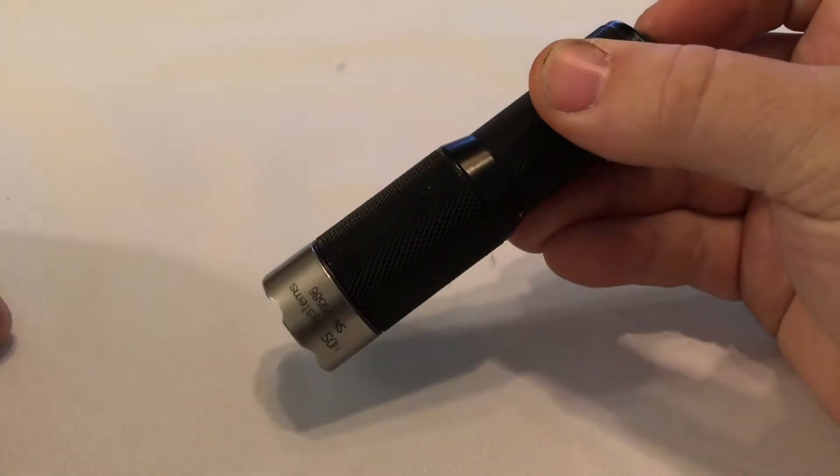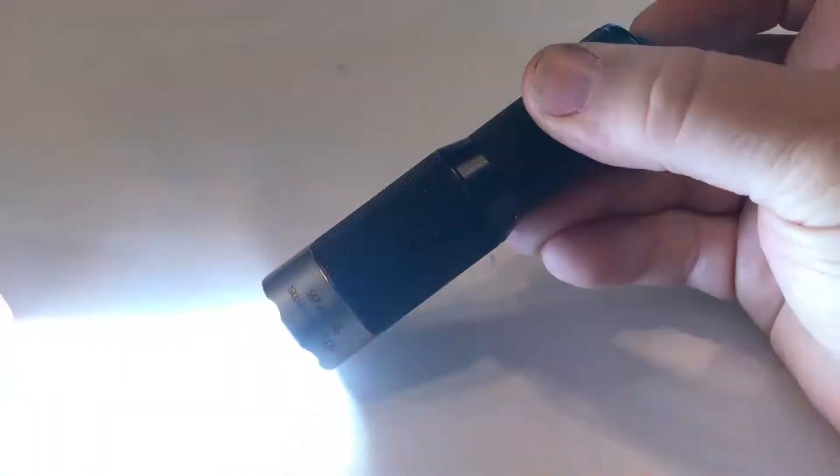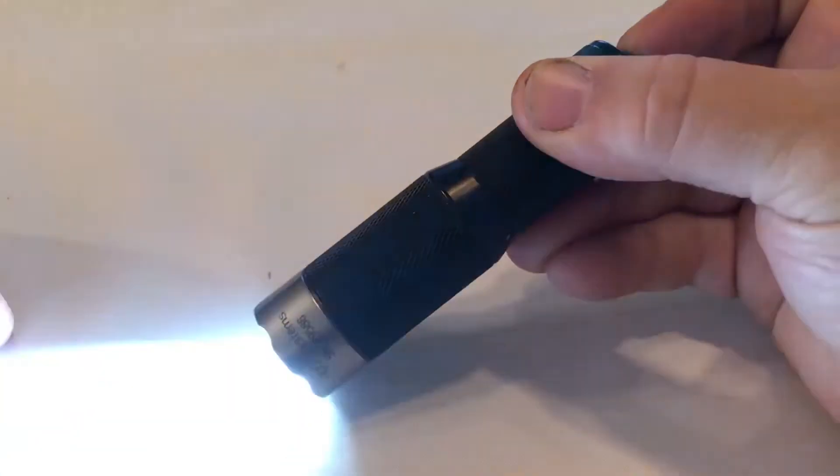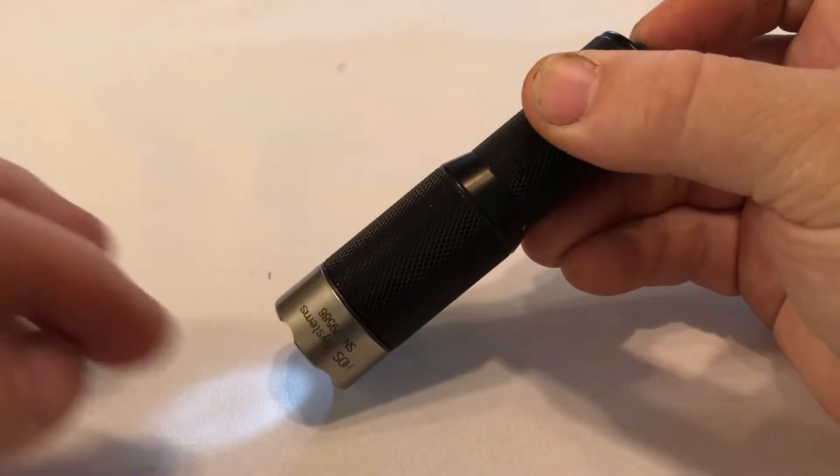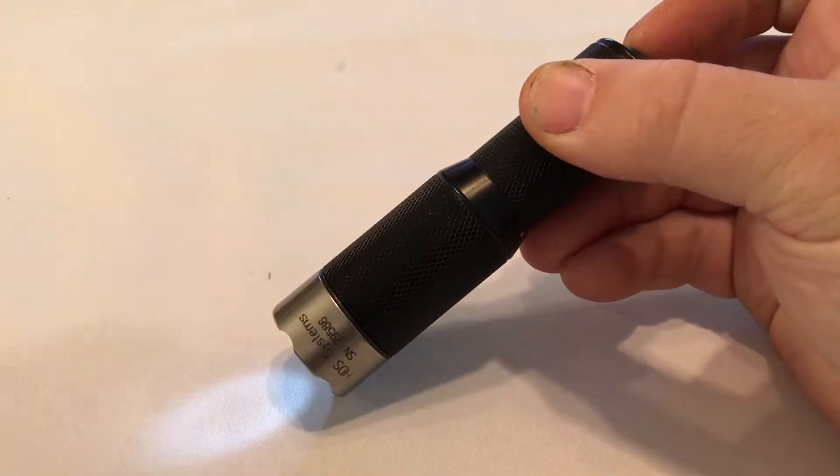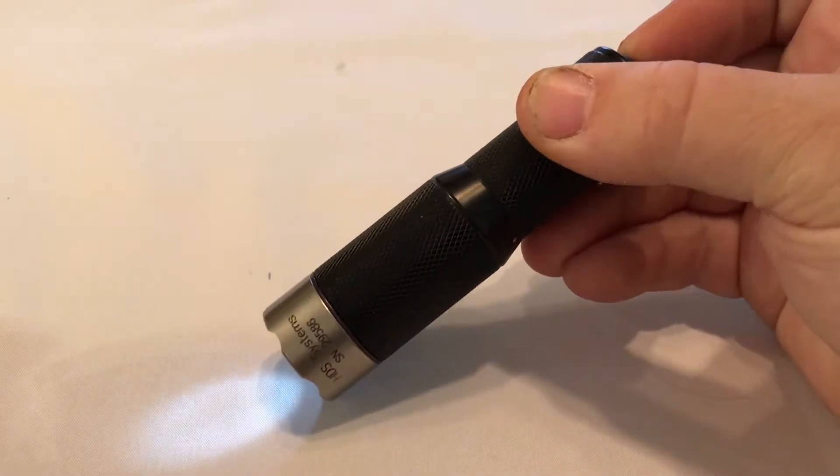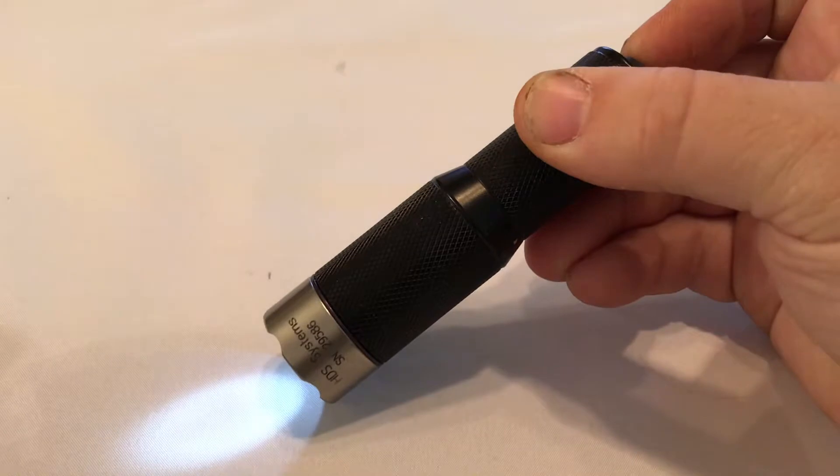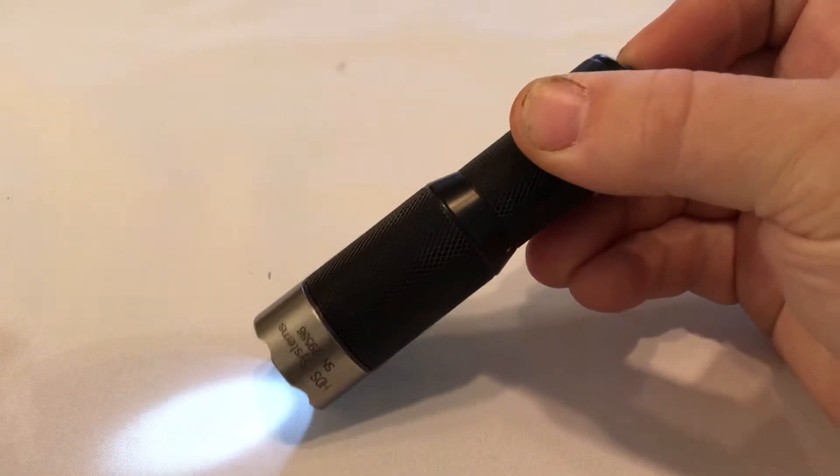Now, we're going to go through all the different brightness settings. You have all these various strobes. When it double clicks like that, that is the lowest setting. Each time we click, it's going to go up through the 24 different brightness settings.